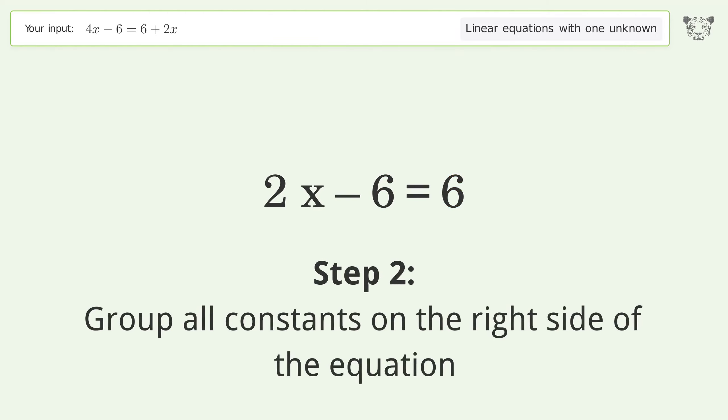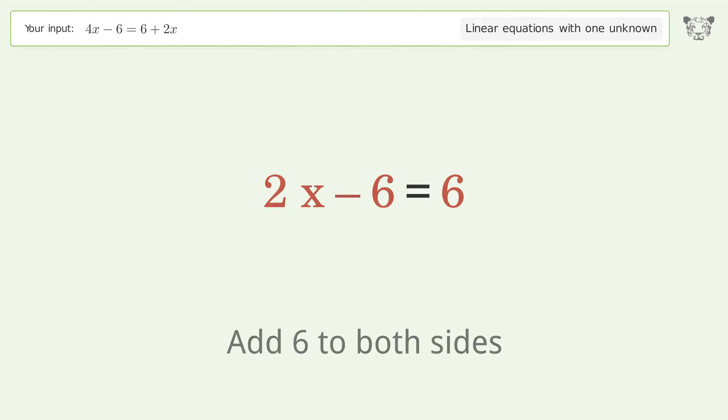Group all constants on the right side of the equation. Add 6 to both sides.